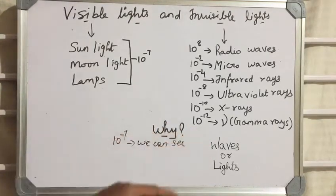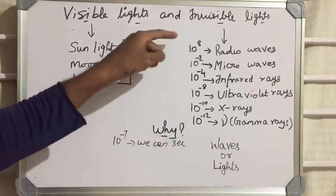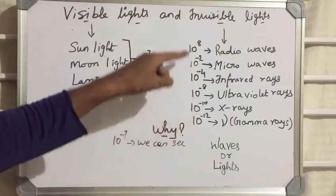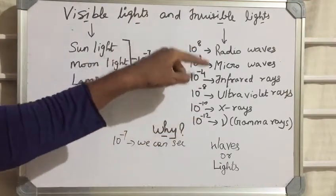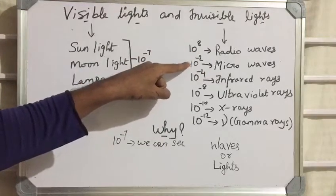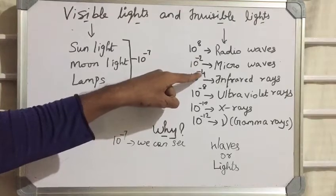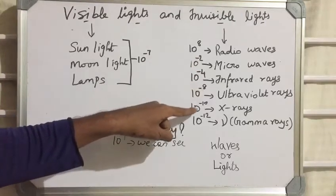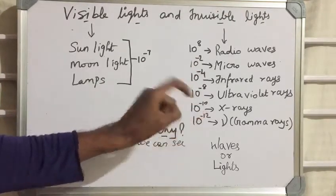So that is why I am giving this here. All lights always have some ranges. You can see 10 to the power of 8 here, 10 to the power of minus 2, 10 to the power of minus 4, 10 to the power of minus 8, 10 to the power of minus 12.